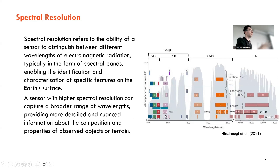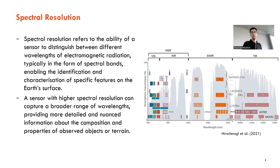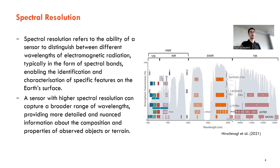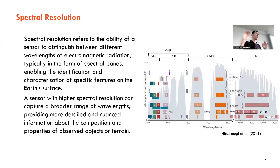Each spectral band provides a separate image and acts as a single feature used as input to machine learning algorithms. For example, Aster has 14 different spectral bands, giving us 14 features. Different minerals show different spectral behavior — one mineral may show high reflectance in band 3 and high absorption in band 4. These characteristics make minerals distinguishable from each other, enabling us to train models to map different minerals on the ground surface.